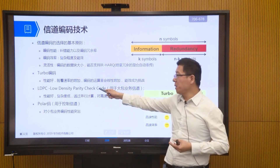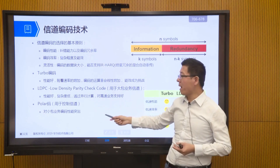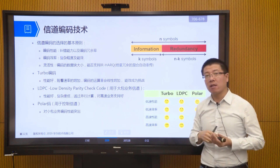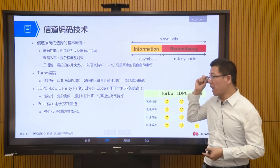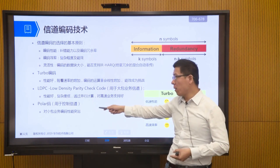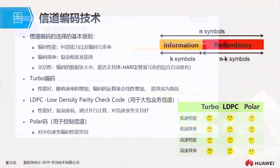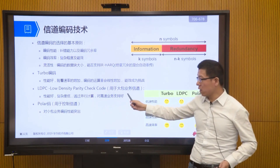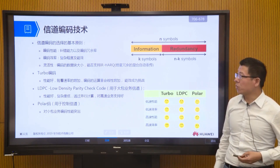Currently, for the data channel we use LDPC encoding, and for the control channel we use polar codes. However, this is only defined for eMBB business scenarios. For future URLLC and mMTC scenarios, the channel coding choice still needs to be determined in R16 and R17 protocols. For low-speed performance, polar codes perform slightly better, while for high-speed large packet services, LDPC coding performs slightly better.